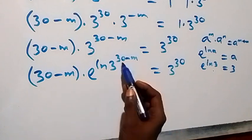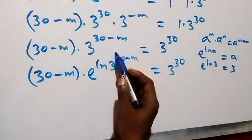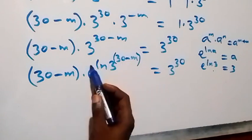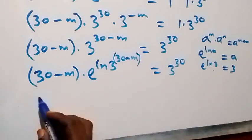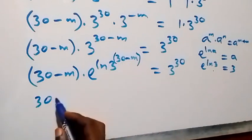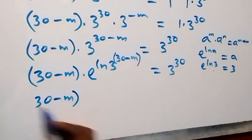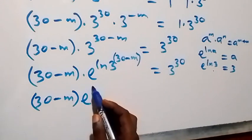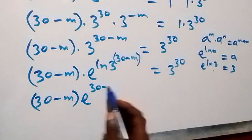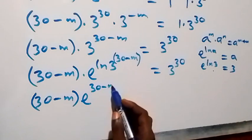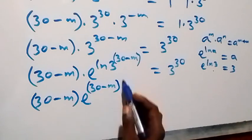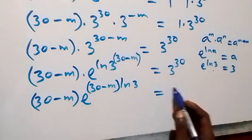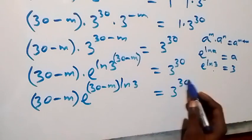From the power law of logarithms, when we take this power to the back, this becomes 30 minus m times e raised to power (30 minus m) times ln 3, and that equals 3 raised to power 30.